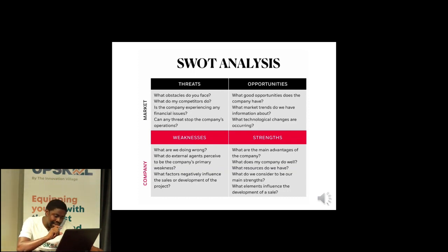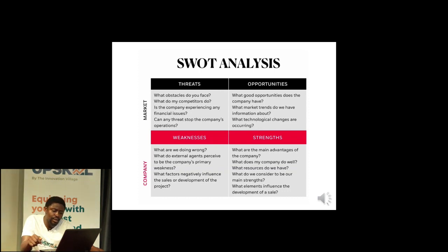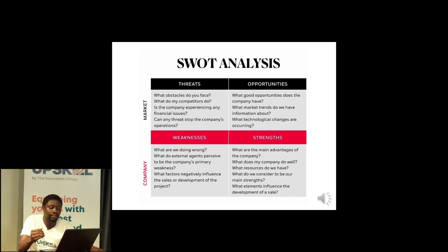At the company level, look at weaknesses: What are we doing wrong? What do external agents perceive as the company's primary weakness? What factors negatively influence the business, sales, or product development? Then look at strengths: What are the main advantages of the company? Where do we win? What does our company do well? How can we leverage that strength? What resources do we need to beat competitors? What elements influence the development of a sale?